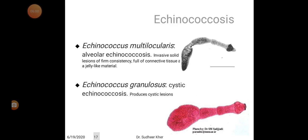There are several Echinococcus species. Echinococcus multilocularis causes alveolar Echinococcus, producing invasive solid lesions of firm consistency, full of connective tissue and a jelly-like material. Echinococcus granulosus causes cystic Echinococcus, producing cystic lesions. These cysts are called hydatid cysts and can settle in the liver, lung, and other parts of organs.